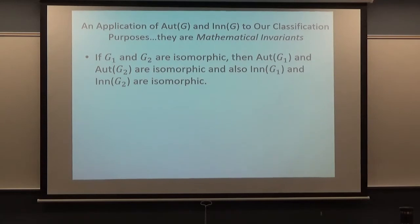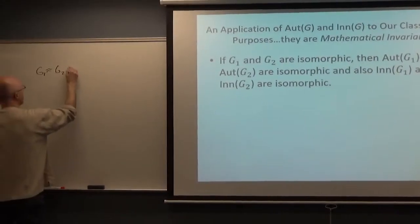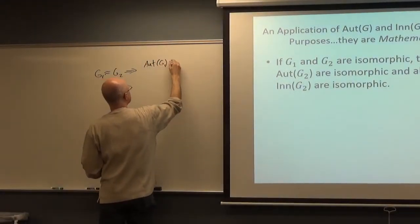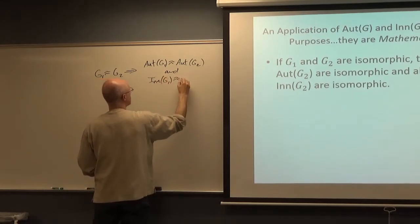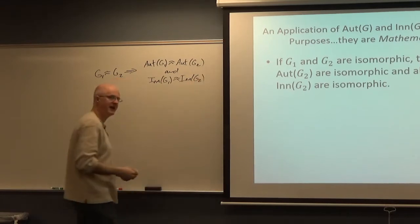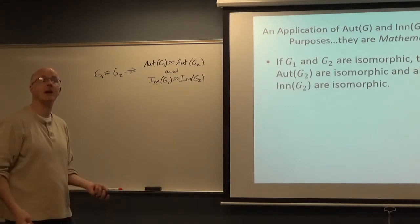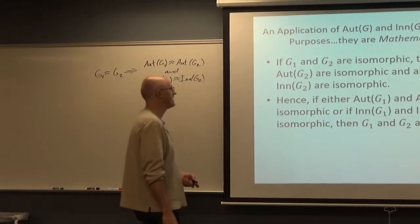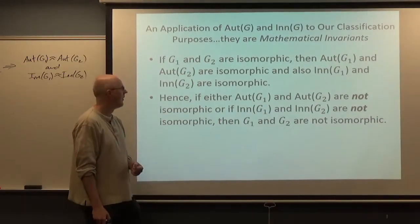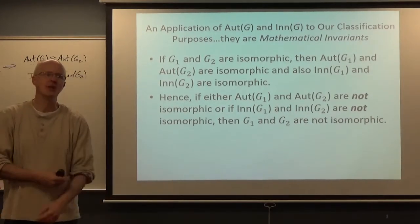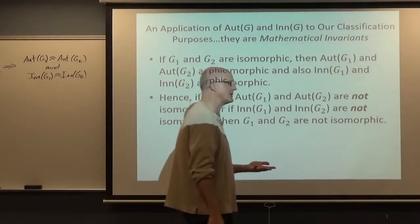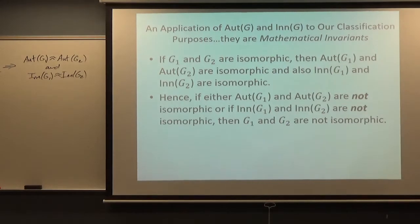You've got two different isomorphisms that come from this. G1 being isomorphic to G2 implies both that Aut(G1) is isomorphic to Aut(G2), and Inn(G1) is isomorphic to Inn(G2). I claim that's a useful thing. How is it useful in our classification scheme? Well, think about the contrapositive of this. If either Aut(G1) and Aut(G2) are not isomorphic, or if Inn(G1) and Inn(G2) are not isomorphic, then G1 and G2 are also not isomorphic.